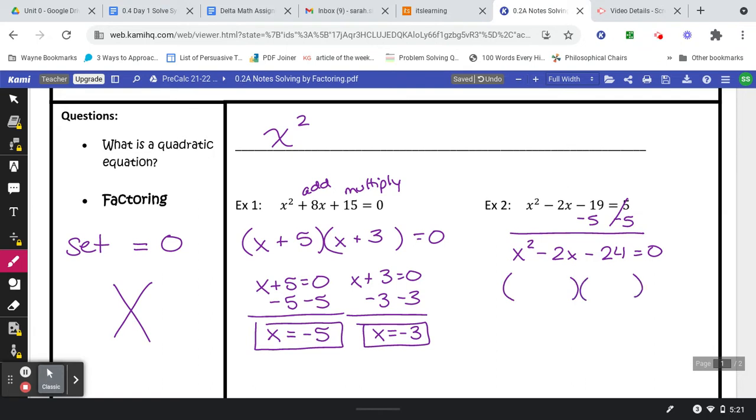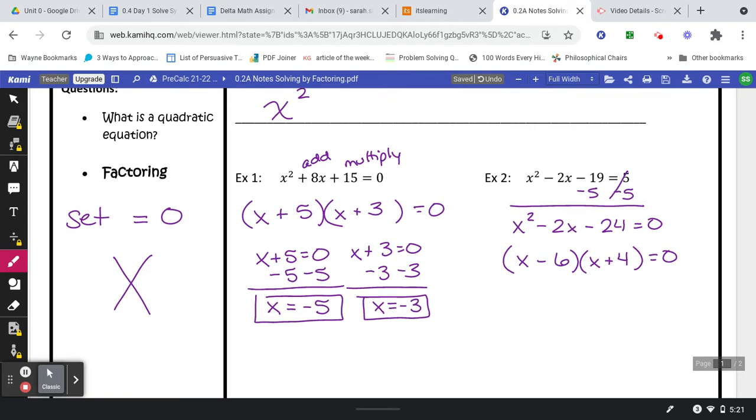So again, looking for numbers that multiply to negative 24, add to negative 2. That's going to be 6 and 4. The 6 will have to be negative and the 4 has to be positive. That's the only way that they will add to negative 2. And then just like before, we're going to set those equal to 0 and solve.